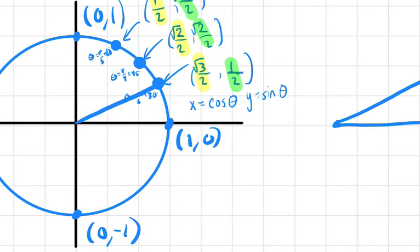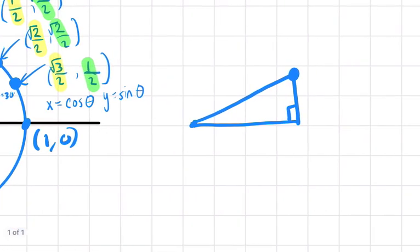Because the hypotenuse of this triangle, excuse me, is the radius of the circle. And the radius is 1. So if you're dealing with a 30, 60, 90 triangle, and the hypotenuse is 1, this side length right here is 1/2. It's half of the hypotenuse. And this right here is just √3/2 because it's 1/2 times √3.